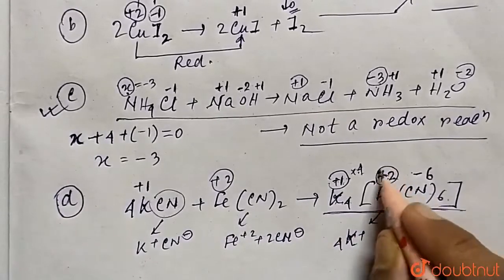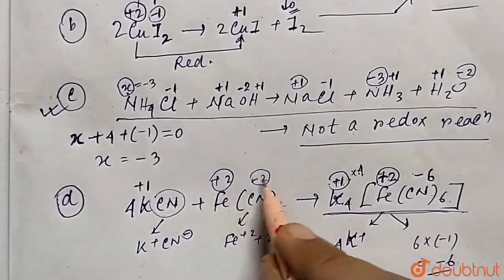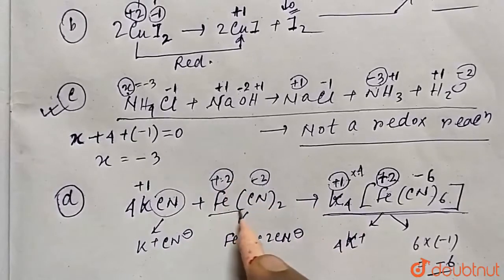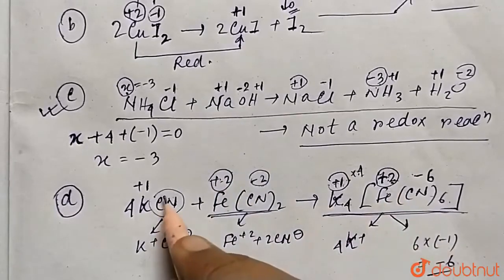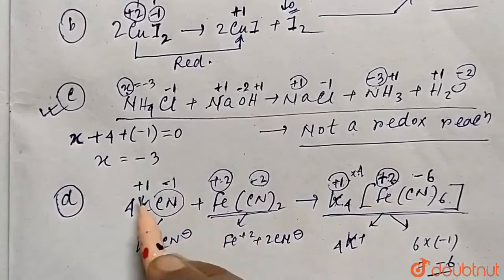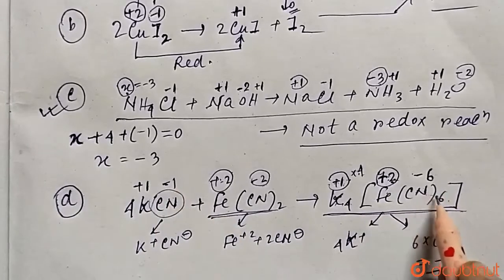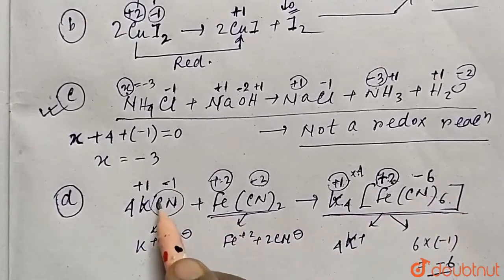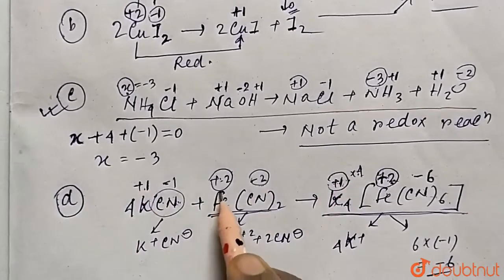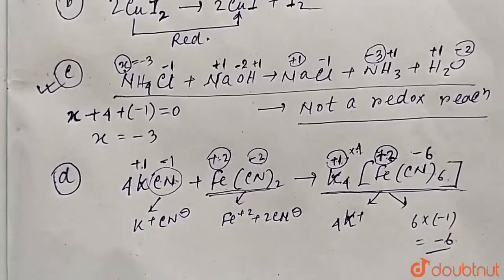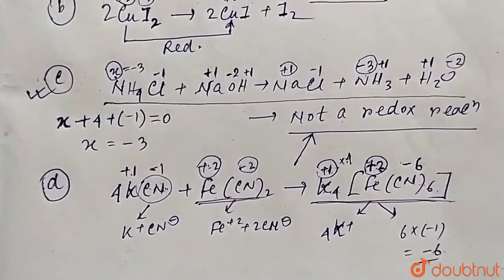In the product Fe(CN)₂, iron is still +2 and each cyanide is still -1, so no change there. Potassium remains +1 in both reactant and product. Carbon and nitrogen within CN⁻ also retain their oxidation states. No oxidation state changes for any element in reaction D, so it is also not a redox reaction.